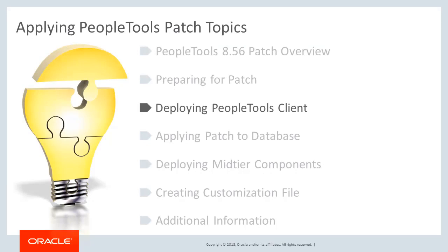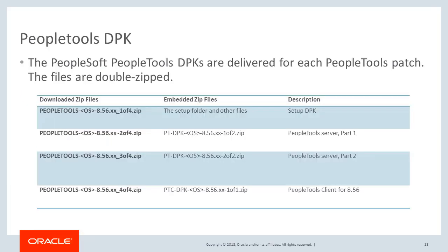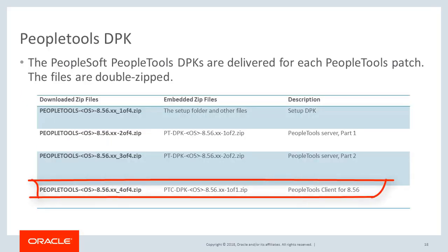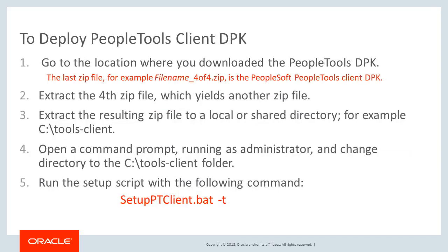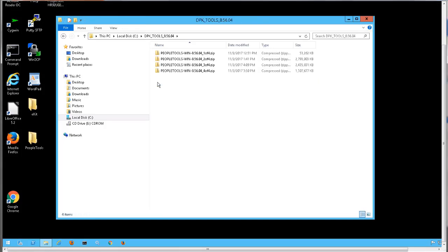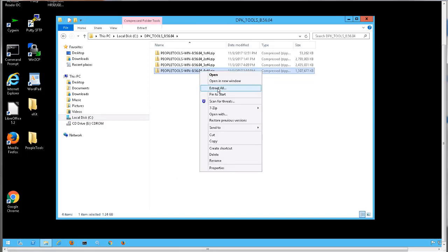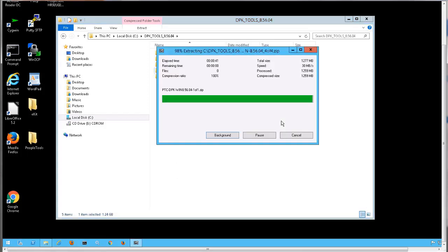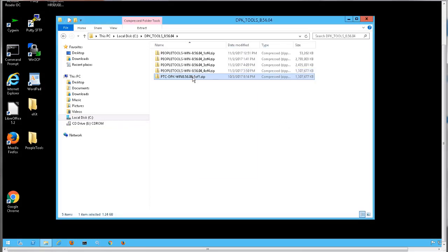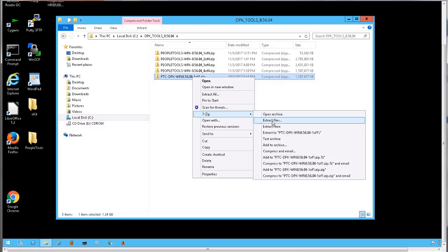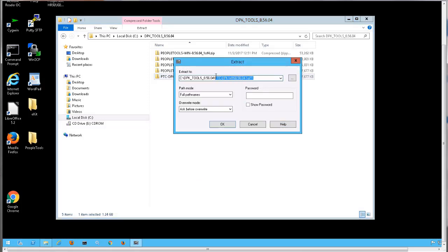The next step is to deploy the PeopleTools client for the patch. The fourth zip file contains the PeopleTools client. You will extract the fourth zip file, then extract the resulting file to a local or shared directory, for example C:\tools-client. This directory will contain the setupptclient.bat file, which is used to deploy the PeopleTools client. Navigate to your PeopleTools DPK directory, extract the fourth PeopleTools file, and extract the resulting zip to a tools-client folder.